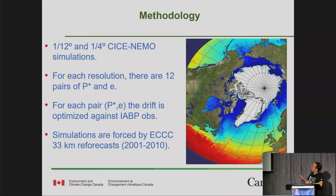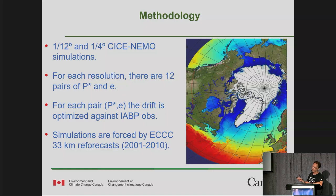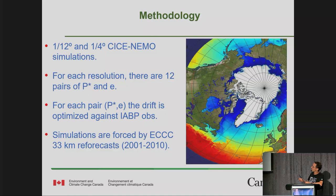Here's our methodology. We use our SICE-NEMO configuration, a regional configuration. We have simulations at 1/12th of a degree — roughly 4 or 5 kilometers in the central Arctic — and also simulations at 1/4 of a degree. For each resolution, there are 12 pairs of P* and E that are tested. For each pair, the drift is optimized against IABP drifting buoy observations — this is different from what was done in CIREX. We optimize the drift by playing with the air-ice and ocean-ice roughness. Simulations are forced by our own atmospheric data, a 33-kilometer reforecast, which just covers a limited period — a bit of a limitation. We do a 3-year pseudo-spin-up, then 6 years for the analysis.